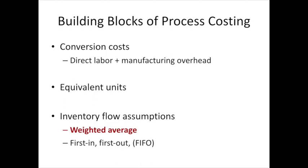The first building block is that we're not going to distinguish between all three product costs — direct materials, direct labor, and overhead. In process costing we separate these into two categories: the first being direct materials, and the second being conversion costs, which are made up of direct labor and manufacturing overhead.